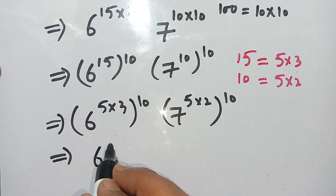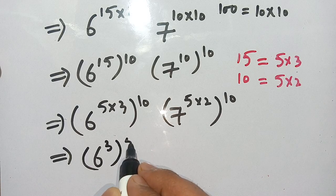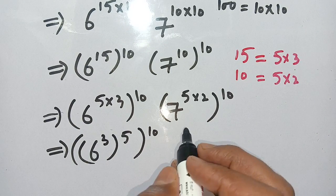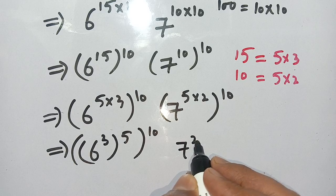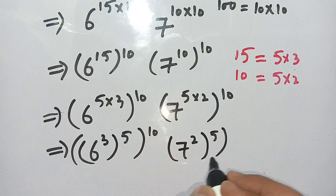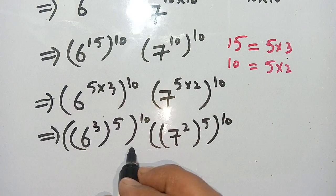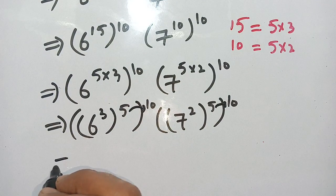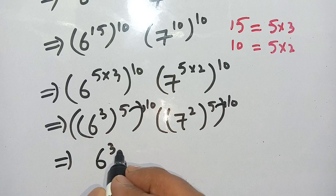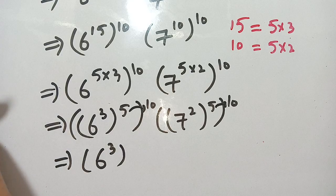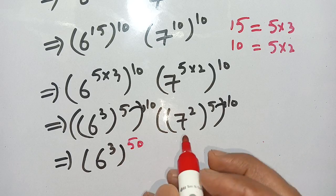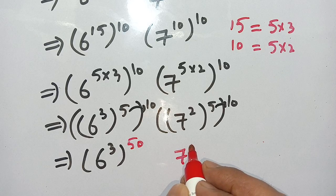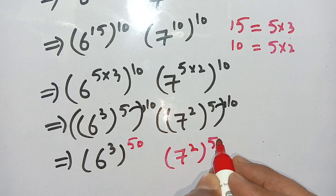We can rewrite 6^(5×3) as (6^3)^5, then raising that to the power 10 gives (6^3)^50, since 5 times 10 is 50. Similarly, 7^(5×2) becomes (7^2)^50, since 5 times 10 is also 50.